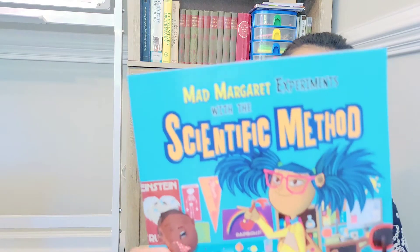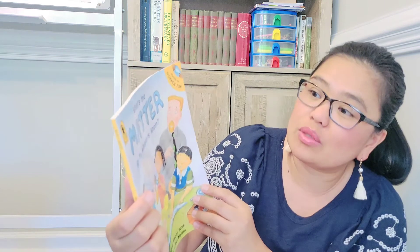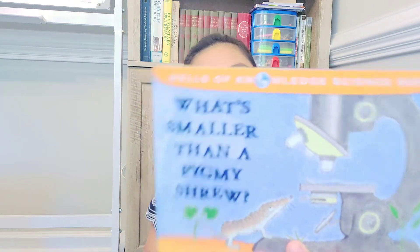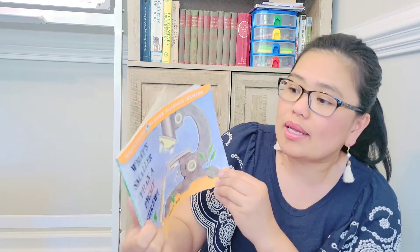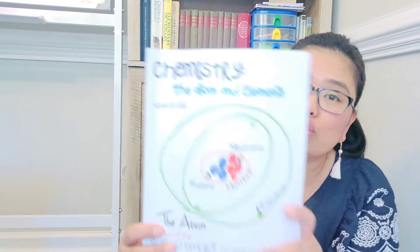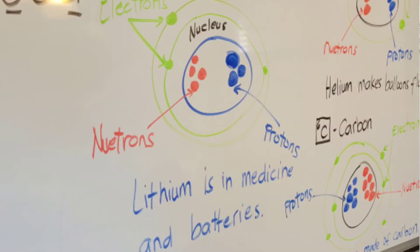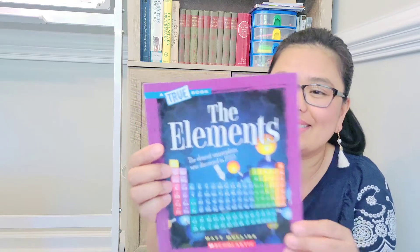I'm going to show you the books we used and will use — I believe there are two more books left. The very first book is Mad Margaret. Then, What's the Matter in Mr. Whisper's Room, and Many Kinds of Matter. Then, What's Smaller than a Pygmy Rule — here we learn about protozoa, the smallest things on earth. The next book is Chemistry: The Atom and Elements, where we learn about neutrons, protons, and electrons. After that is The Elements, where we learn the table of elements.